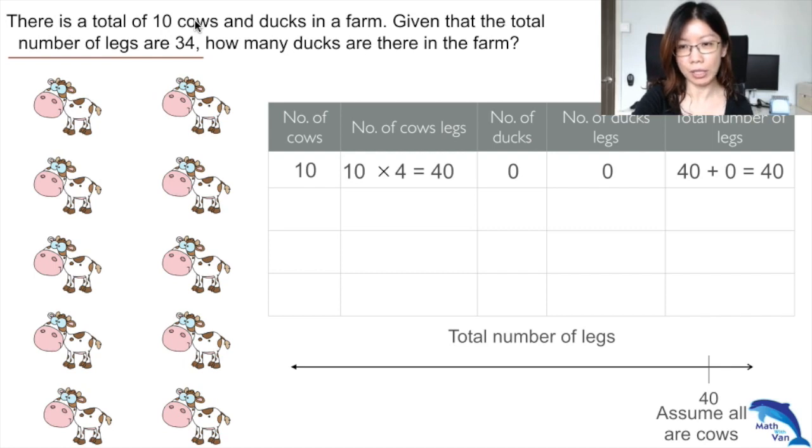We notice that there are too many legs at this point, and of course that would be because there are some ducks. What should we do? We should start taking out the cows because there should be some ducks. Let's take out one cow.